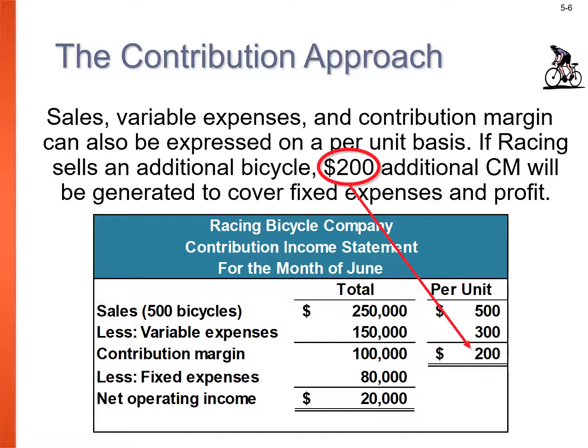We can determine the contribution margin per bike, or per unit. Sales, variable expenses, and contribution margin can also be expressed on a per unit basis. The racing bike sells for $500 per unit; 500 bikes were sold for $250,000 total. Dividing gives a sale price of $500 per bike. Variable expenses of $150,000 divided by 500 bikes gives $300 variable expense per unit.